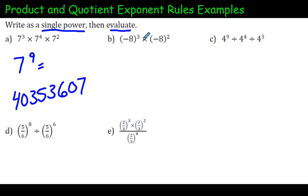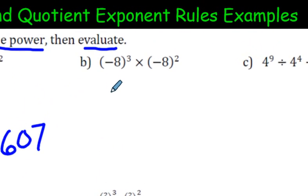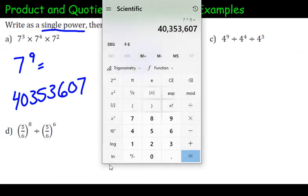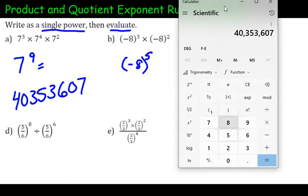And let's do that again here. Remember, we're multiplying. We have the same base, so you write down the same base again, negative 8. And we add the exponents. 3 plus 2 is 5. We're done. But if we want to evaluate, it's good to put it in brackets, especially if it's a negative base.